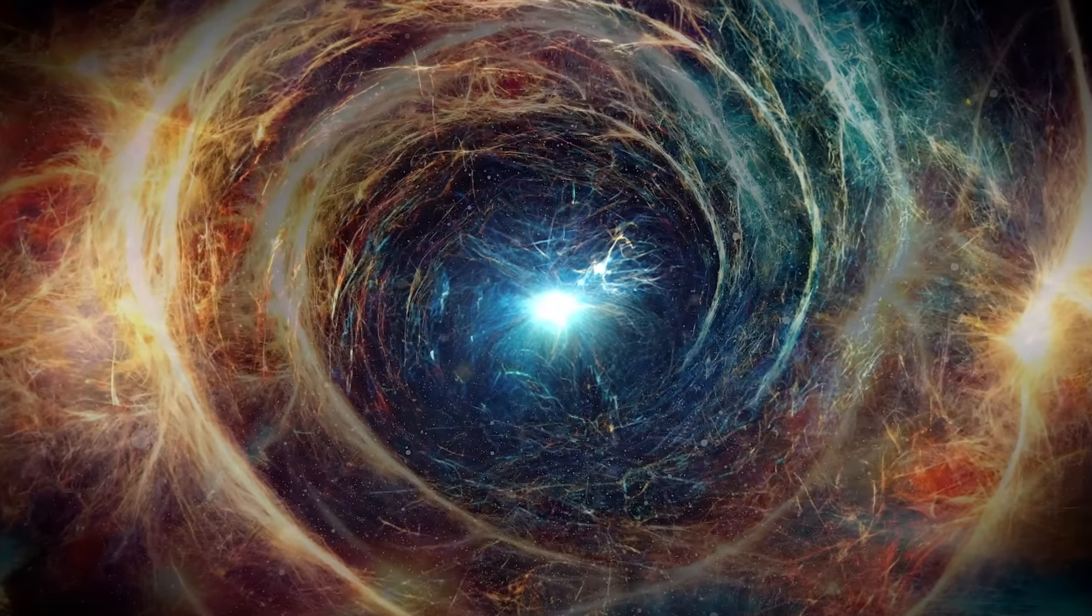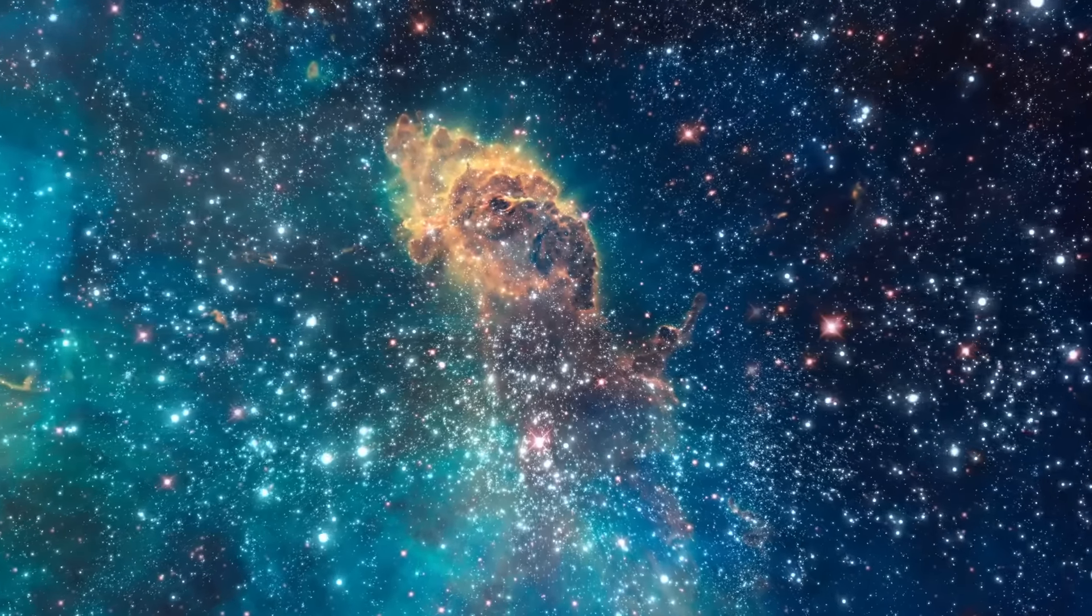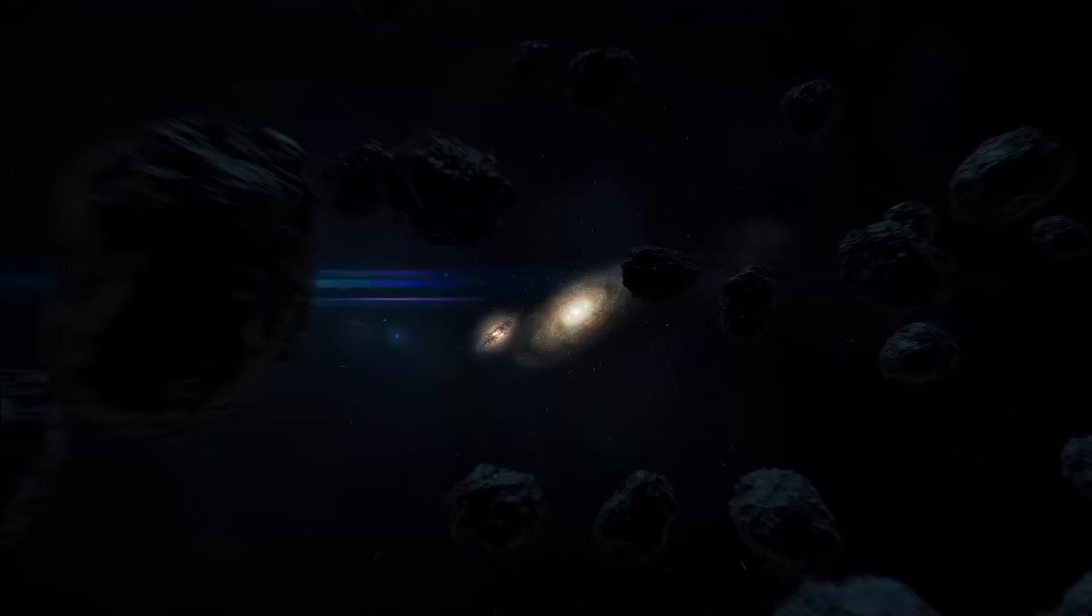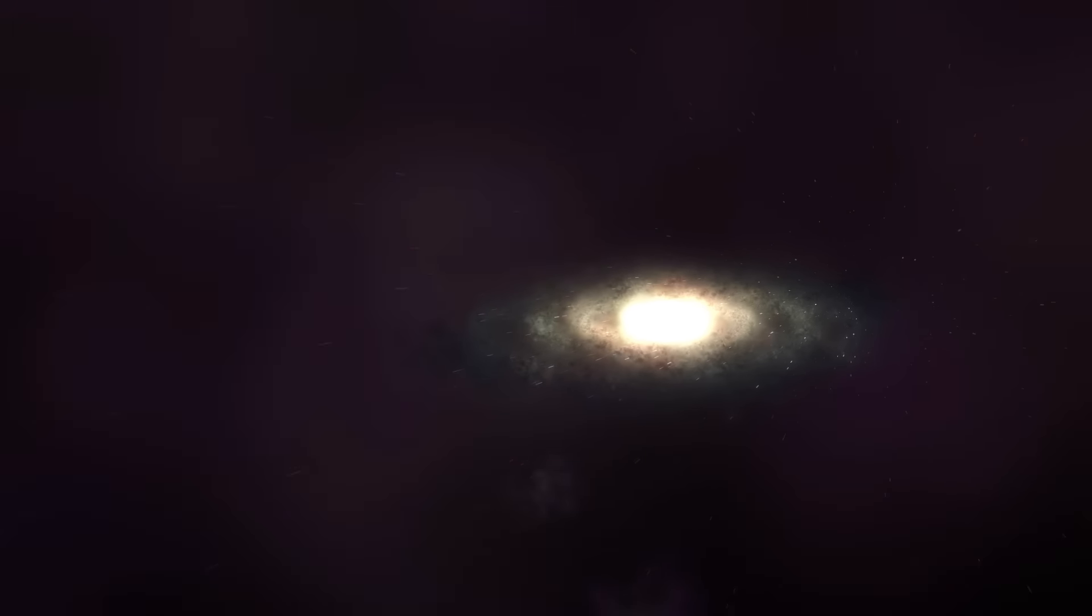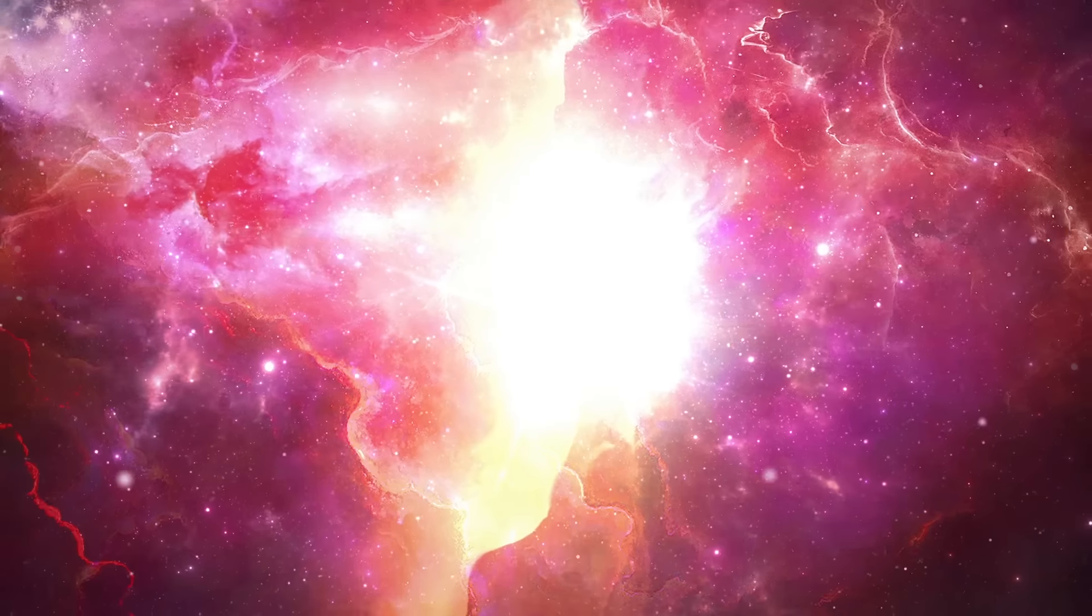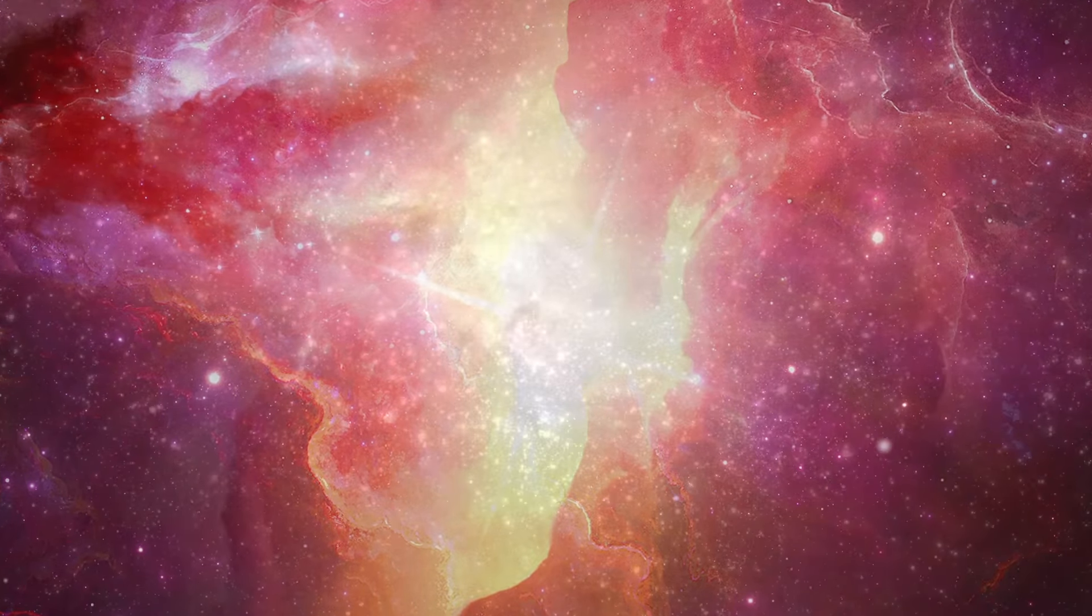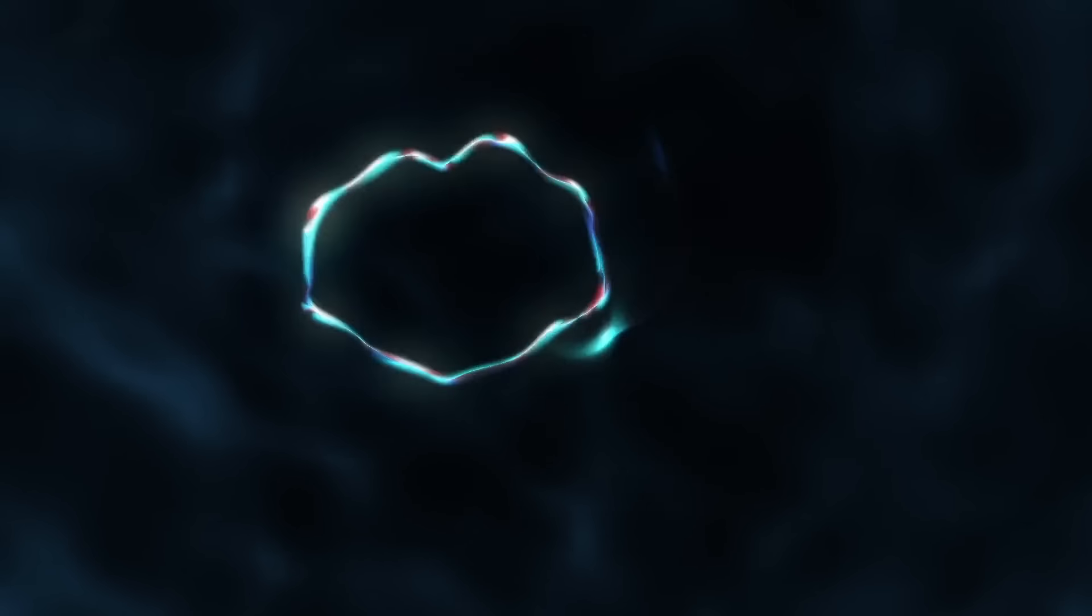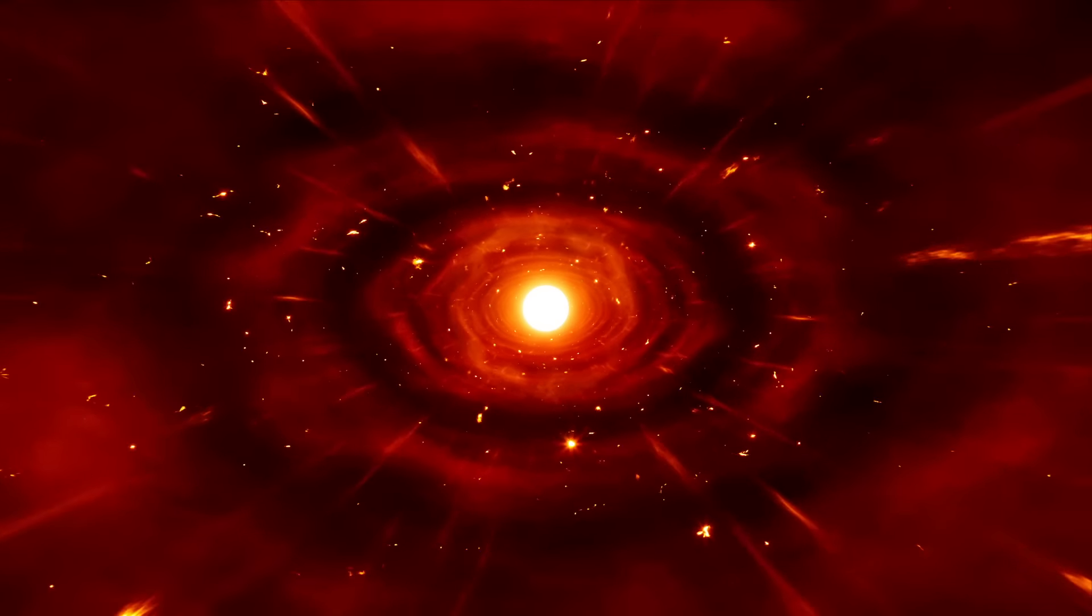So the universe today is less ordered than it was then. So it's far more likely that it would fluctuate into existence now than it would fluctuate into existence then, because it's less ordered now. So that means that the whole universe with us in it, having this conversation and everything we can see, it's more likely that would fluctuate into existence than it is that the Big Bang fluctuated into existence. So you're faced with this massive problem that if you want to say it's a quantum fluctuation, it's overwhelmingly more likely, billions and billions and trillions of times more likely.